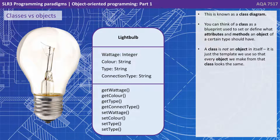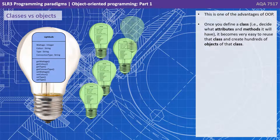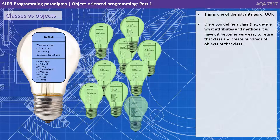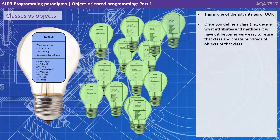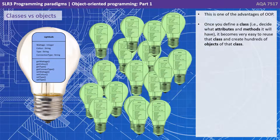This is what's known as a class diagram. You can think of a class as a blueprint used to set or define what attributes and methods an object of a certain type should have. This is really important to understand early on: a class is not an object in itself — it is just the template we use so that every object we make from that class will look the same. This is one of the advantages of OOP. Once you define a class and decide what attributes and methods it will have, it becomes very easy to reuse that class and create hundreds of objects from it.